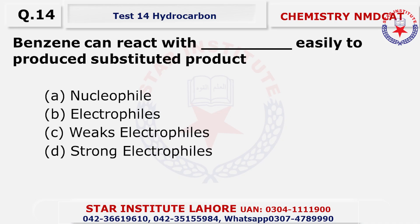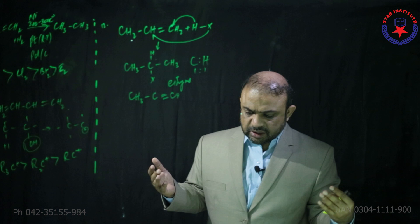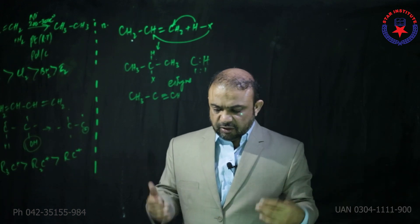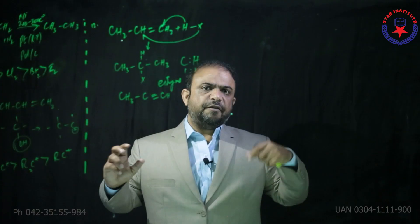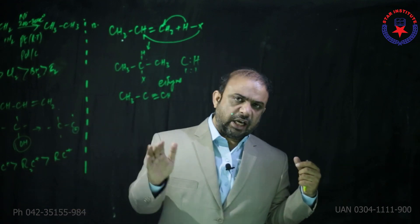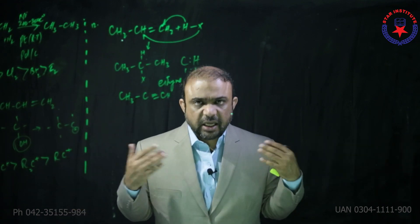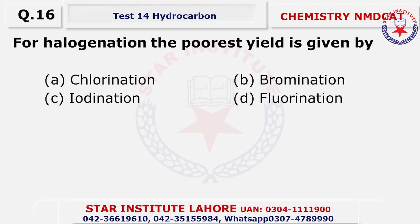The stronger the electrophile, the easier it is to attack. So the choice is strong electrophiles. Question 15: for halogenation reaction, the fastest yield — check your textbook — the fastest is by fluorine, followed by chlorine, then bromine, and then comes iodine.